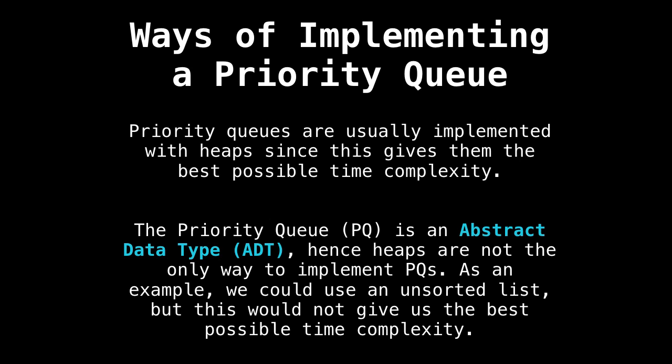The heap just lets us actually implement that behavior. As an example, we could use an unsorted list to achieve the same behavior we want for a priority queue, but this would not give us the best possible time complexity.